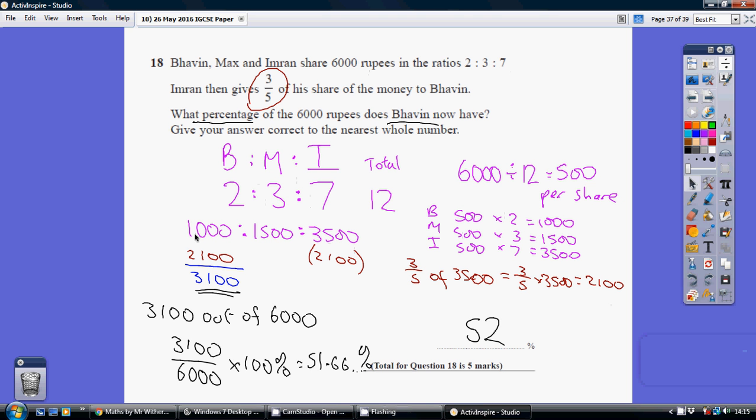That's our starting point. Now we're told that Imran gives three-fifths of his share to Bovine. How much did Imran have to start with? 3500. And he's going to give away three-fifths of this.